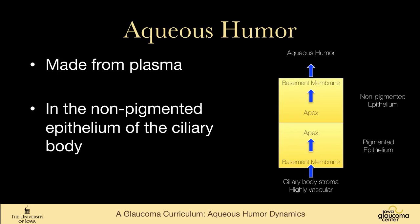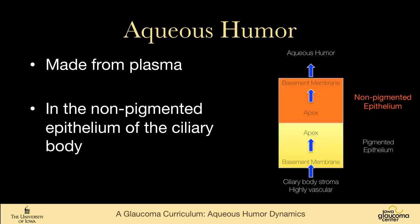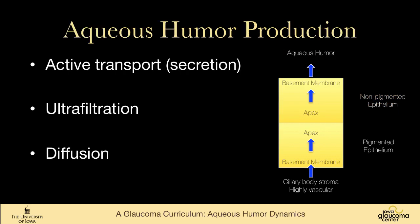Aqueous humor is made from plasma by the non-pigmented epithelium of the ciliary body. The process starts in the stroma of the ciliary body, where there's a very abundant vascular supply with fairly leaky vessels that provide lots of plasma. It moves into the pigmented epithelium, and from there into the non-pigmented epithelium, becoming part of the aqueous humor. There are three basic mechanisms: active transport, ultrafiltration, and diffusion.